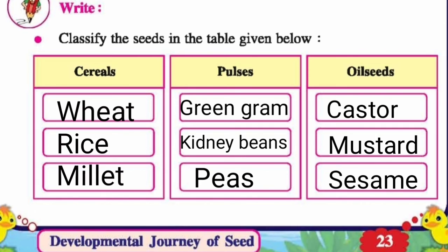These seeds can be divided into two parts when you break them. If you break a pulse seed, it divides into two parts and does not leave any oily mark on paper — so those are pulses. Then oil seeds like Caster, Mustard, and Sesame: if you break these seeds and put them on paper, they will leave an oily mark on the paper.